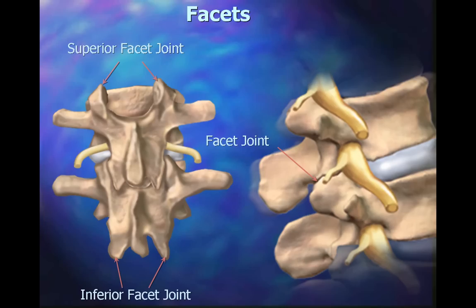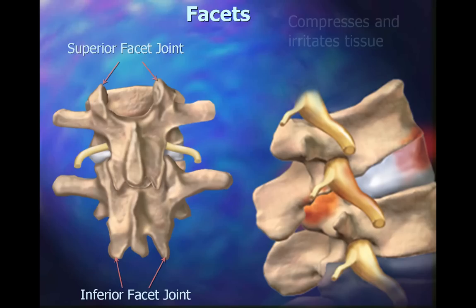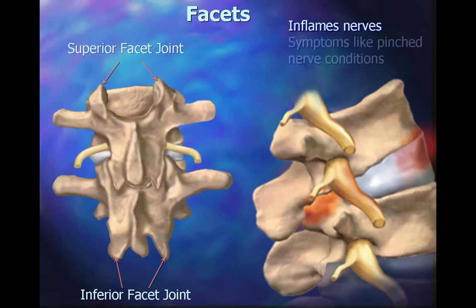Facet Joints are hinge-like, located at the back of the spine, and link the vertebrae together. When the facets are not gliding smoothly, they can compress and irritate the soft tissue, such as the joint capsule surrounding the Facet Joint Complex.